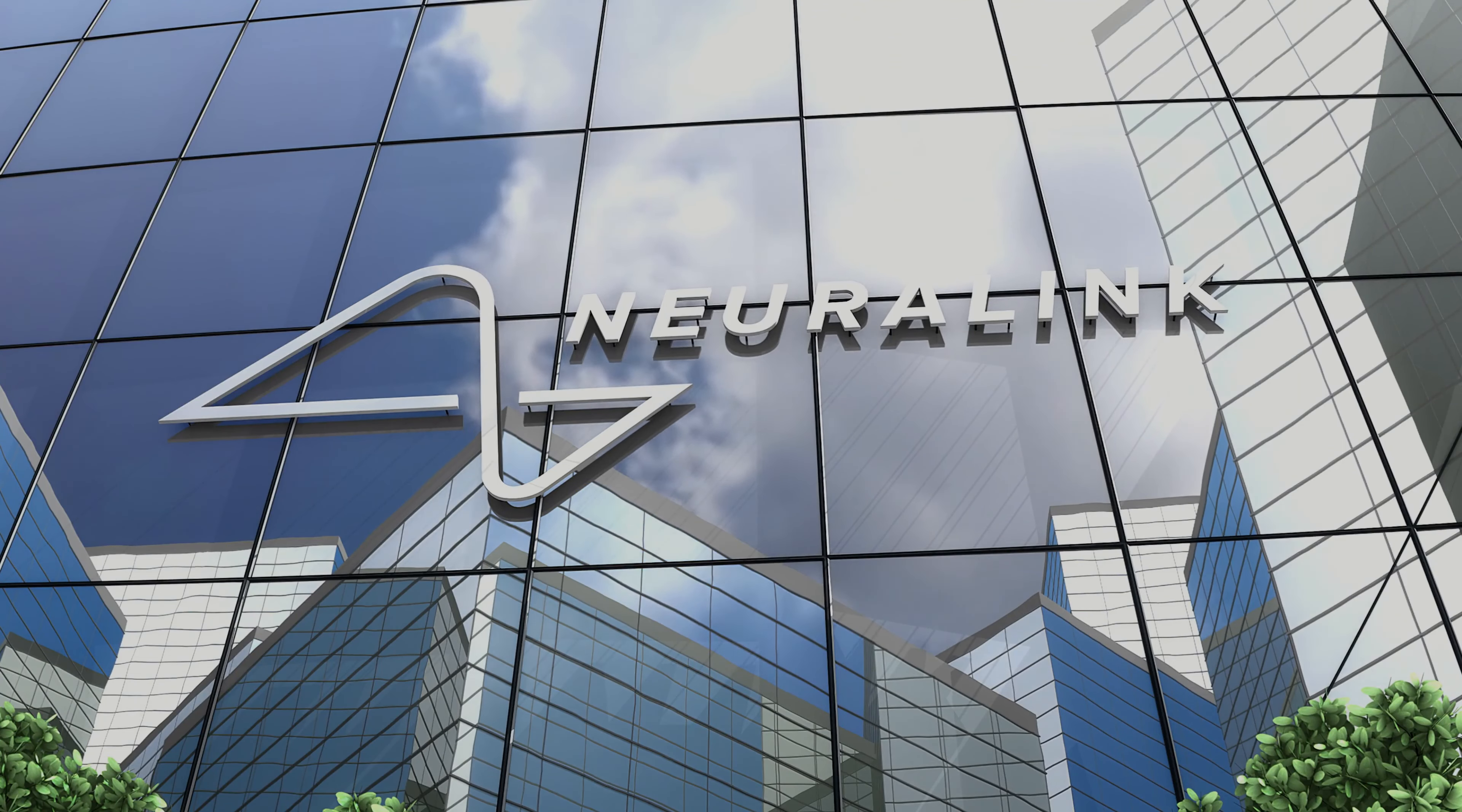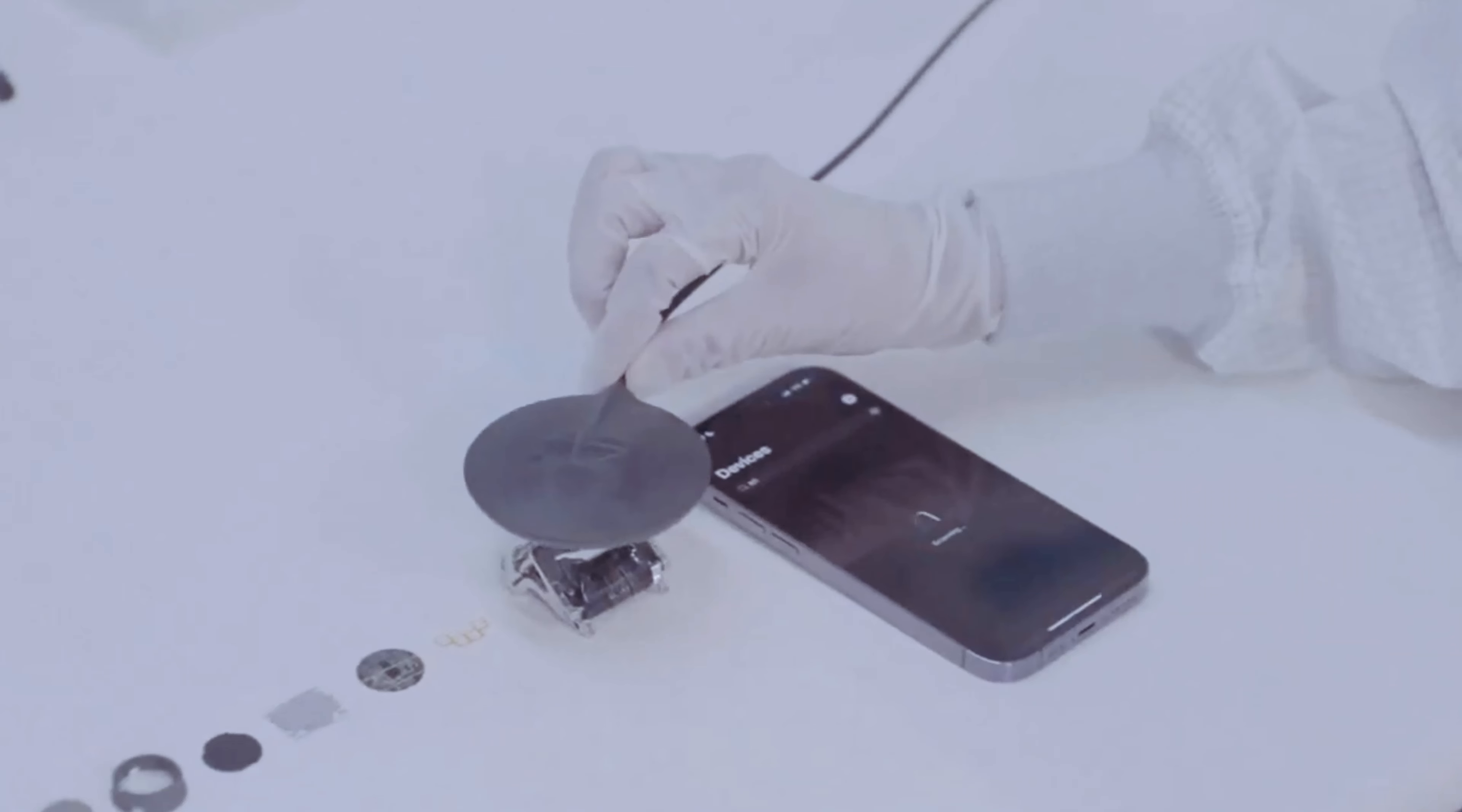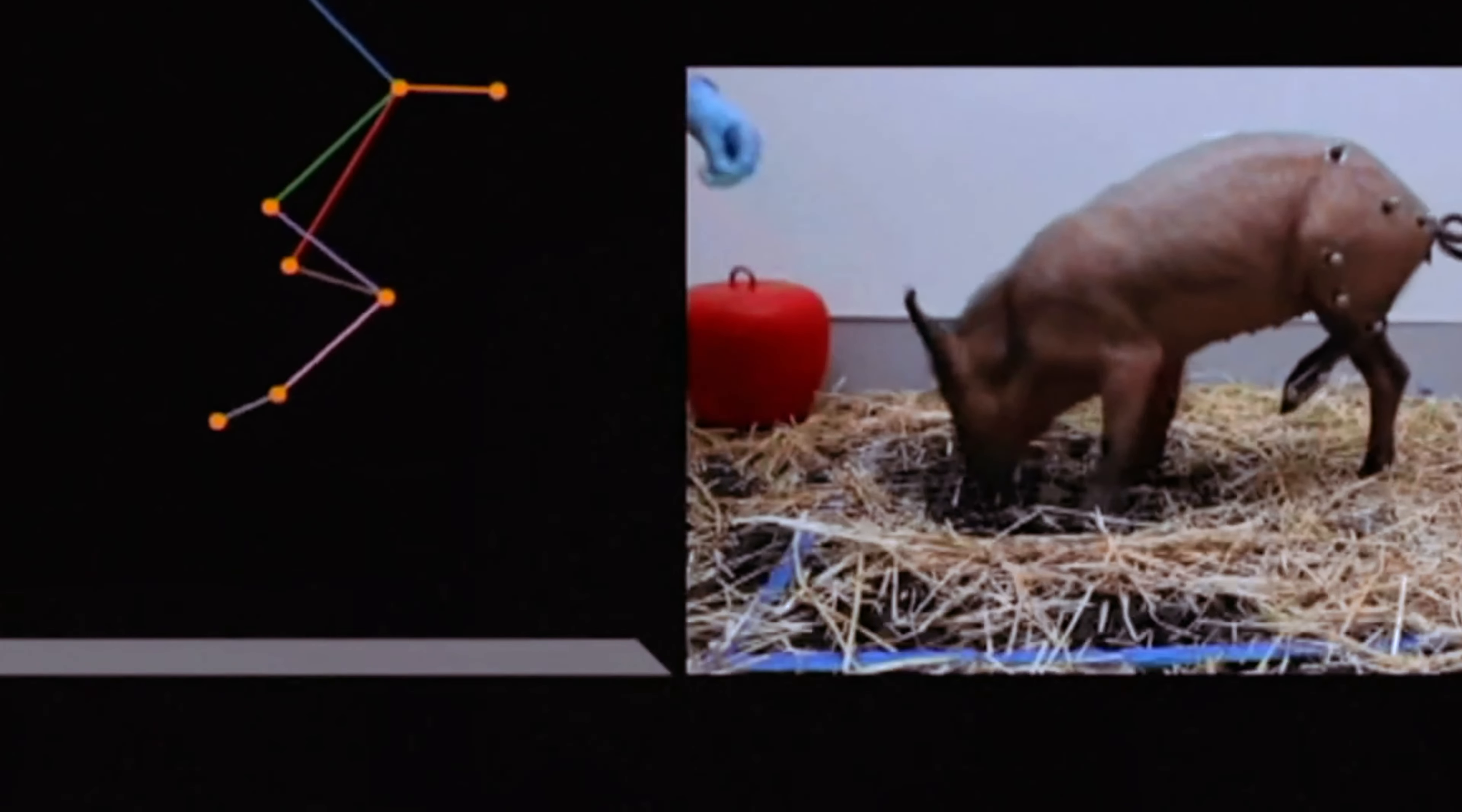Companies like Neuralink, supported by Elon Musk, are making this real. They've raised lots of money to develop these brain implants that could help restore vision and do amazing things. BCIs have been studied for a while and they're getting better every day thanks to advances in science and technology.